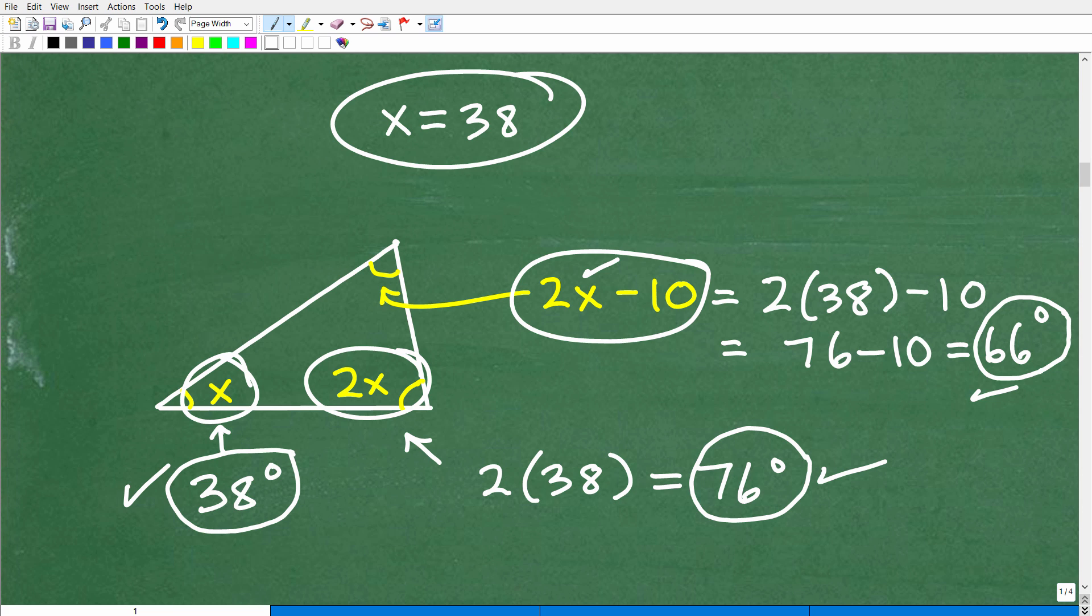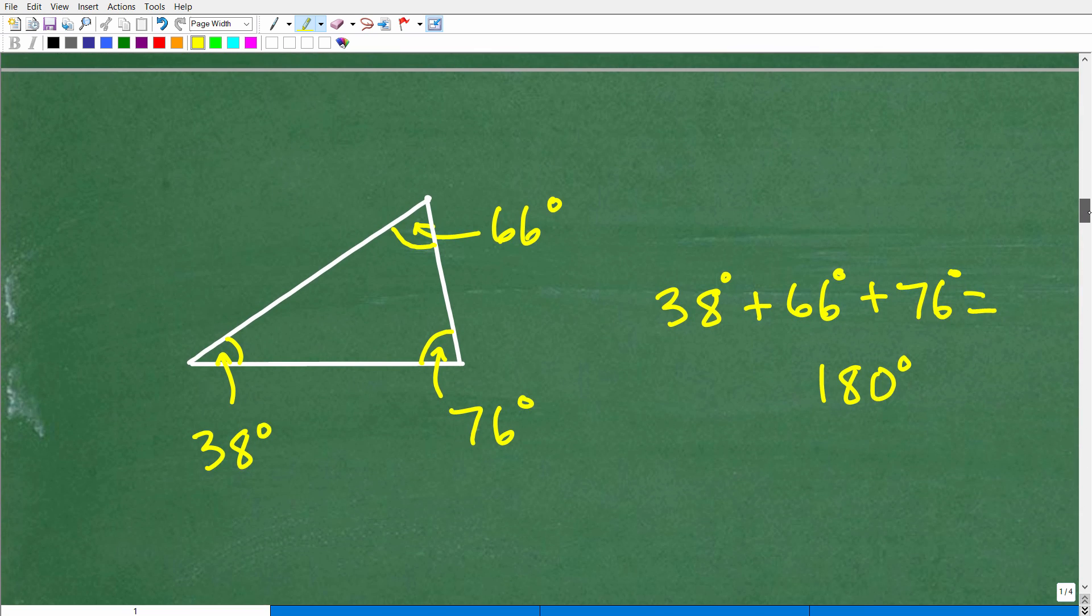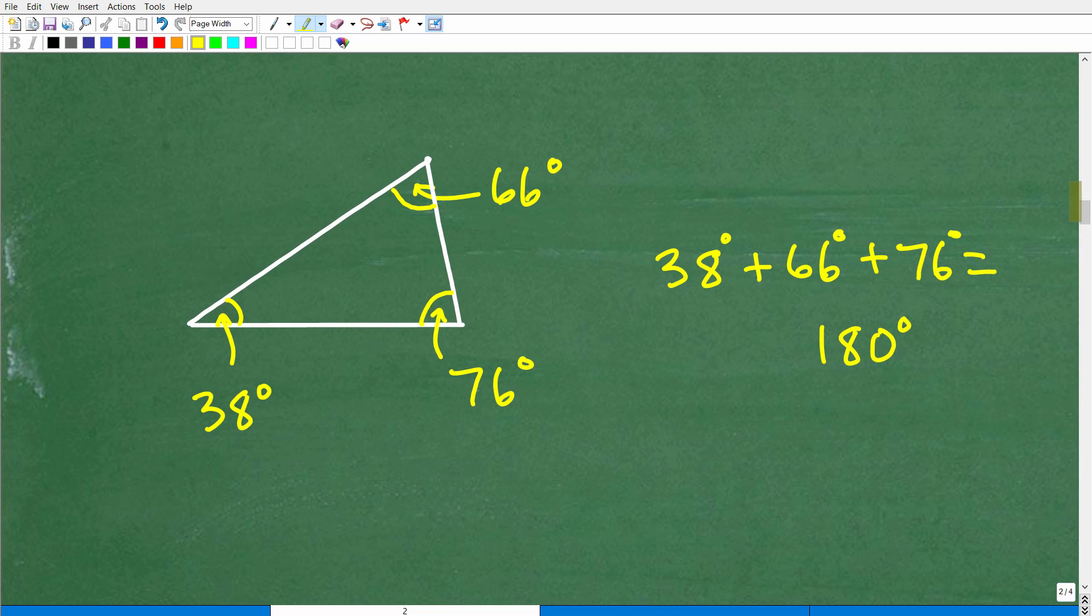Now, you know, if you have enough time on your test or quizzes or homework, and you're like, you know what? I just want to make sure that I did this right. Well, it's pretty easy to check. We could just simply add up these actual angles and see if this works out. See if these add up to 180 degrees. So let's go ahead and do that now. So we have 38 plus 66 plus 76. When we add these up, you do, in fact, get 180 degrees.